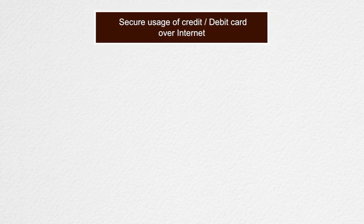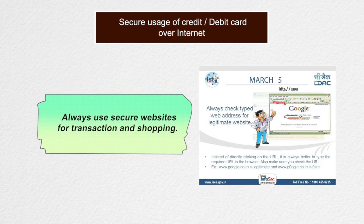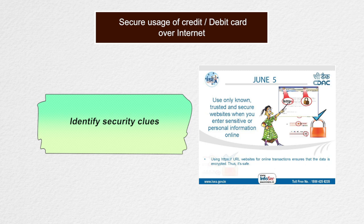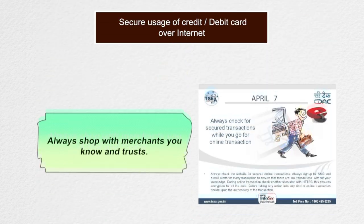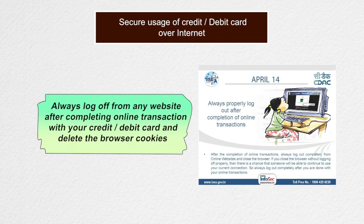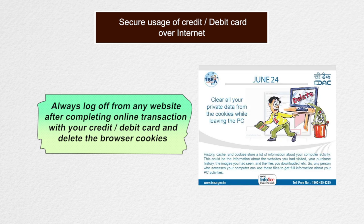For secure use of credit or debit cards over the internet: Always use secure websites for transactions and shopping. Look for signs of security such as a lock image at the bottom of your browser or a URL that begins with HTTPS. These signs indicate that your purchases are secured with encryption to protect your account information. Always shop with merchants you know and trust. Always log off from any website after completing online transactions and delete the browser cookies.